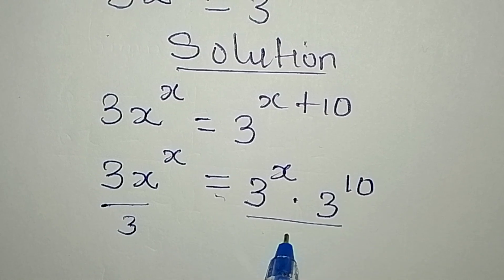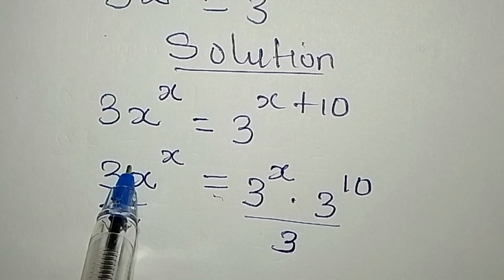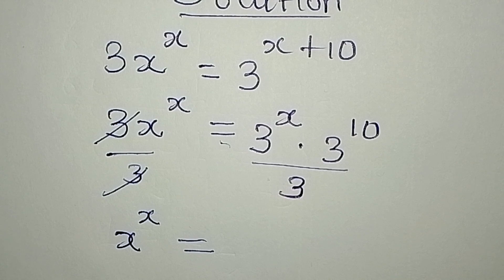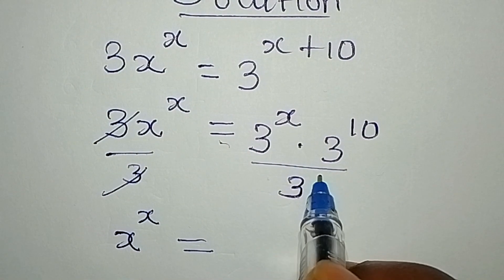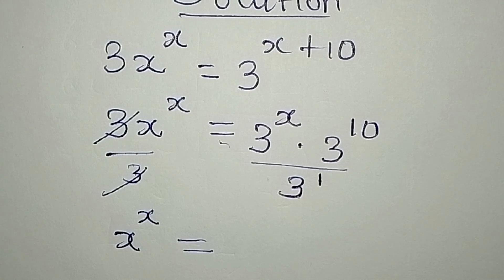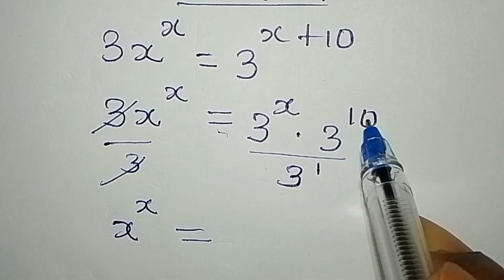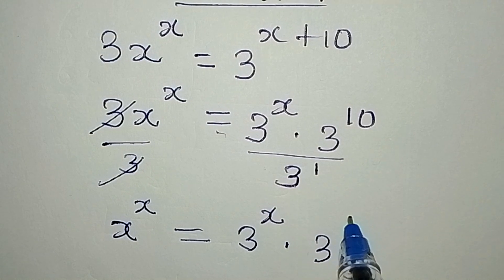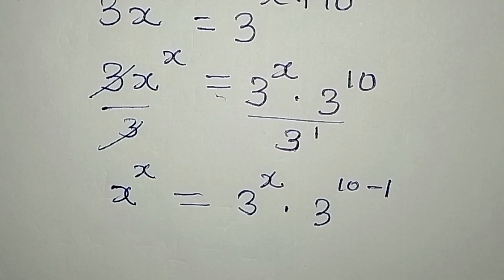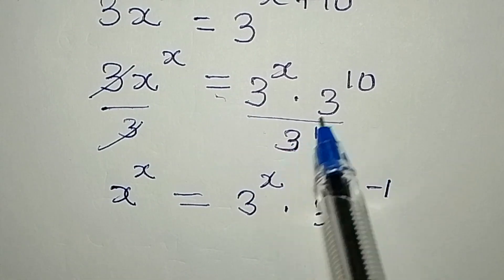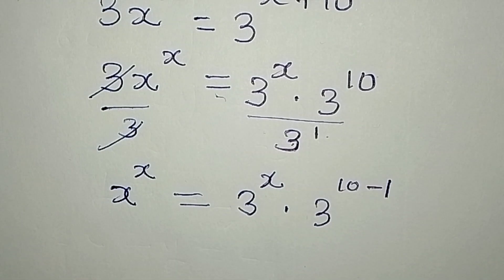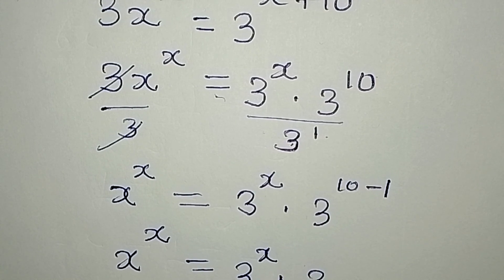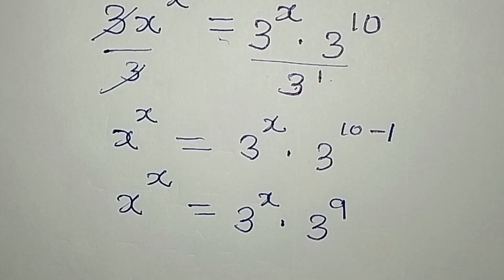I can divide both sides by 3, so that the 3 cancels, and then x to the power of x equals... these three cannot cancel directly, but we know this has a power form of 1. So I can combine to get 3 to the power of x multiplied by 3 to the power of 10 minus 1, giving x to the power of x equals 3 to the power of x multiplied by 3 to the power of 9.